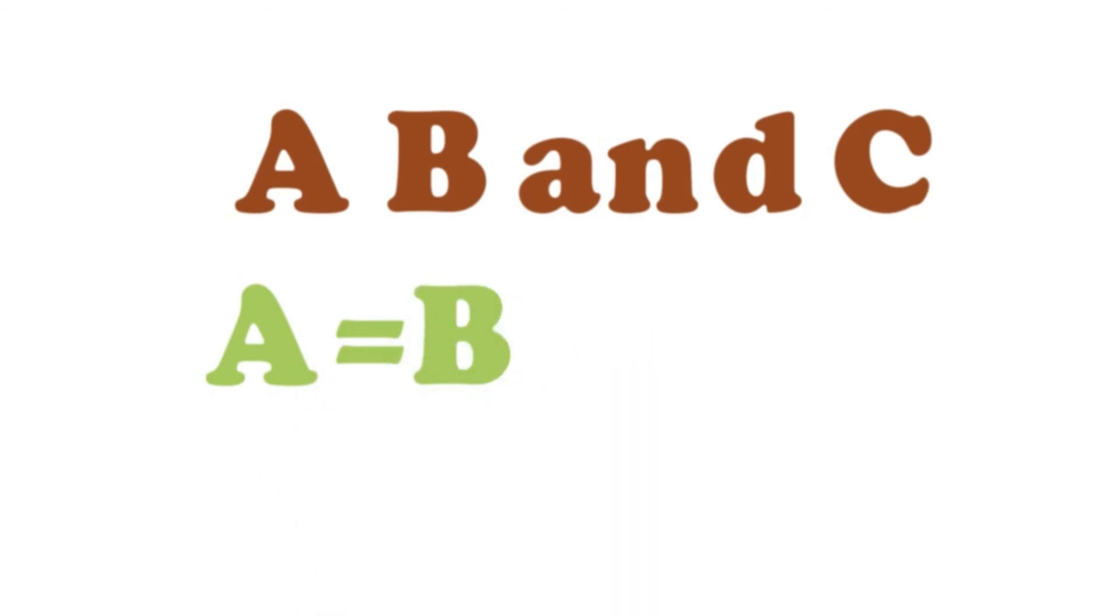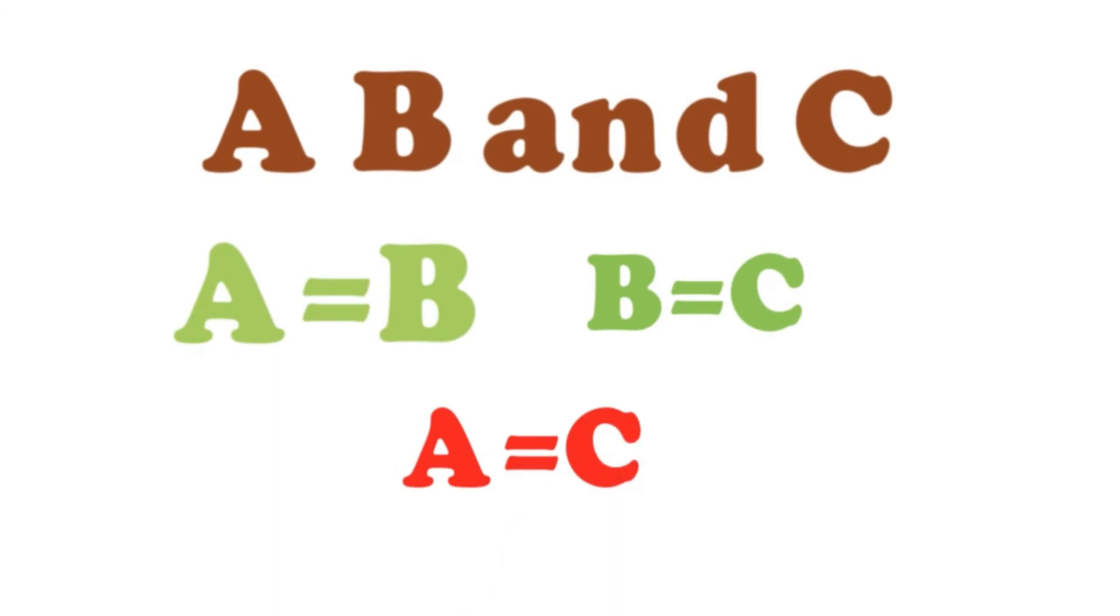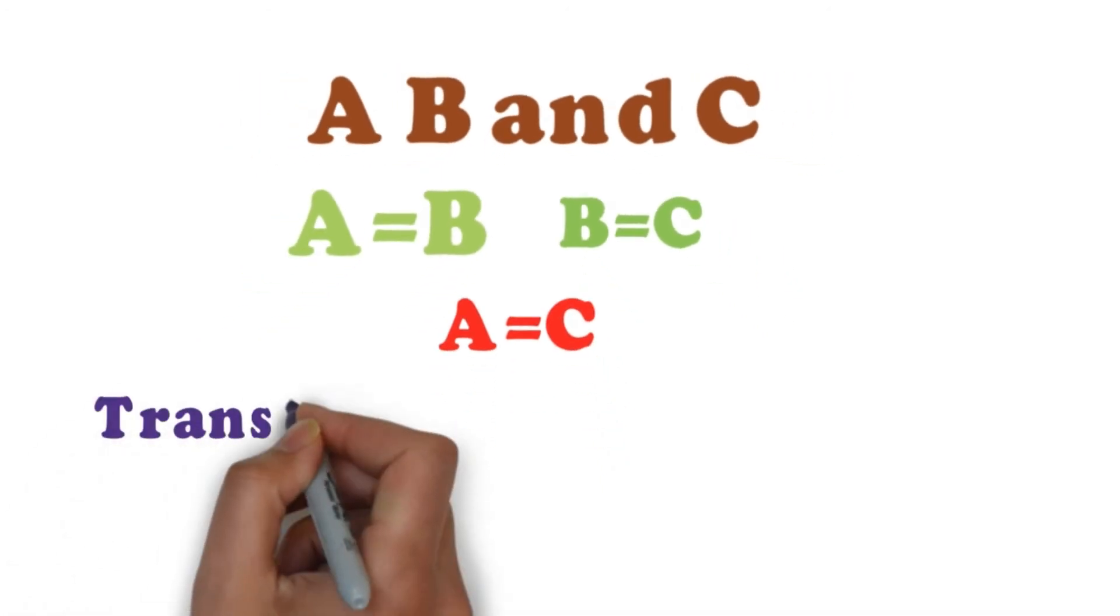Now according to mathematics, if we have three numbers A, B, and C, and number A is equal to B and number B is equal to number C, then number A will also be equal to number C. This is known as the transitive property.